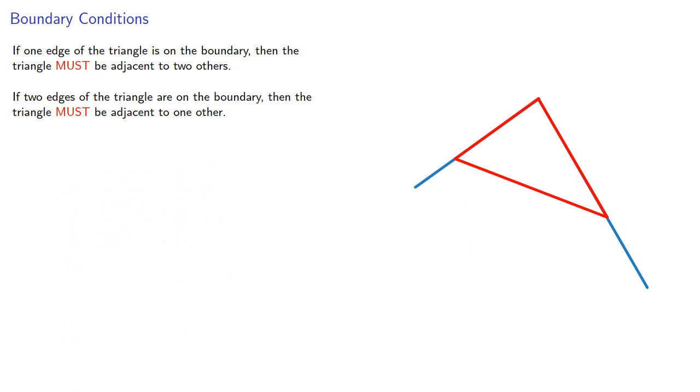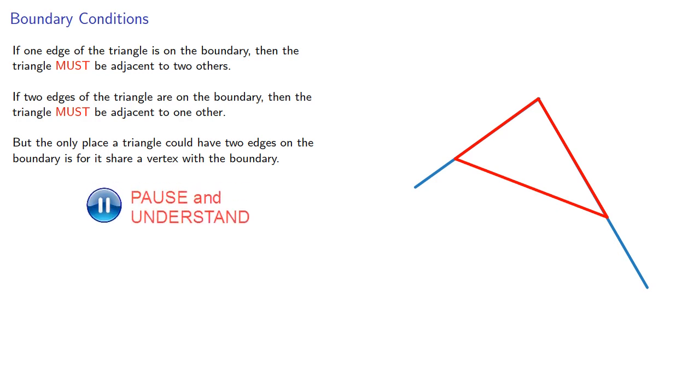But the only place a triangle could have two edges on the boundary is for it to share a vertex with the boundary. So the triangles at the vertices of the region are important.